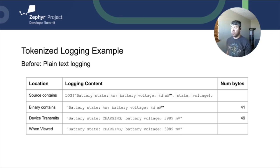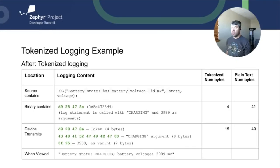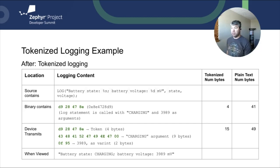Now let's see how this changes when you enable tokenized logging. The source code contains the same logging statement. When enabling tokenized logging, this will be substituted with a 32-bit hash token ID taking up four bytes. When the device transmits to your terminal, it will send a 4-byte token, a 9-byte charging string argument, and a 2-byte voltage integer value. The total bytes sent over the wire is 15 bytes. Both display the same logging message to the end user. Tokenized logging saves approximately 9% in binary size, reducing 41 bytes to 4, and 70% in the encoded size for transmission. Additionally, the expansion of the log processing is offloaded from the board to the device running the tokenizer code, which can be helpful for time-critical applications.